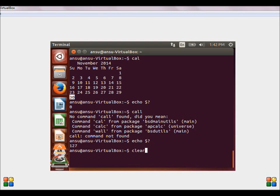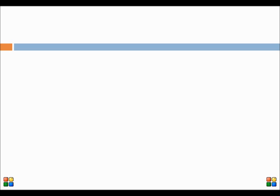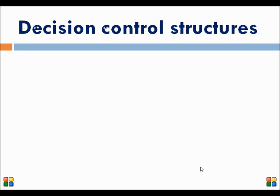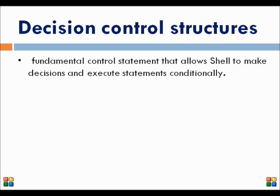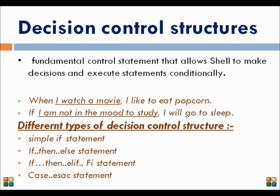Let us see our next topic, which is decision control structure in shell. Decision control structure is fundamental control statements that allow shell to make decisions and execute statements conditionally. Different types of decision control structures are: simple if statement, if-then-else statement, if-then-elif-fi statement, and case-esac statement.